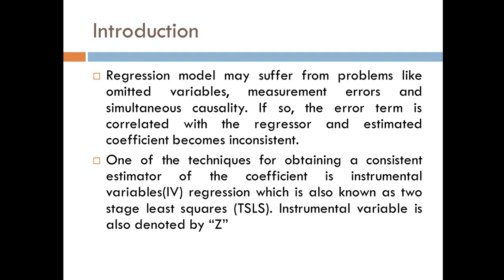One of the techniques for obtaining a consistent estimator of the coefficient is instrumental variables regression, which is also known as two-stage least squares. Instrumental variable is also denoted by Z.